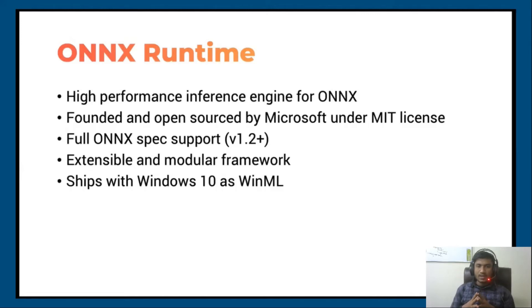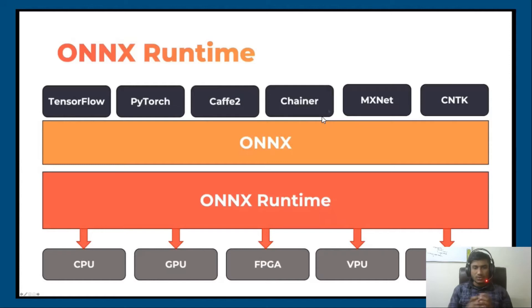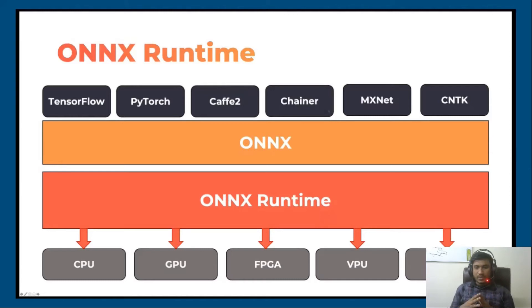This is the ONNX Runtime diagram. On top of ONNX you have all the frameworks like TensorFlow, PyTorch, Caffe2, and so on. After that, you use some converters — TensorFlow to ONNX, PyTorch to ONNX, scikit-learn to ONNX — which convert your existing model to the ONNX file format. ONNX Runtime acts as a kind of middle-level runtime, converting these things into a common language so that anyone can utilize it.